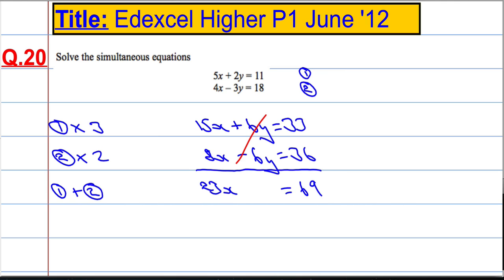I'm going to divide both sides by 23 to get x. So we get x equals 69 divided by 23, which is 3.